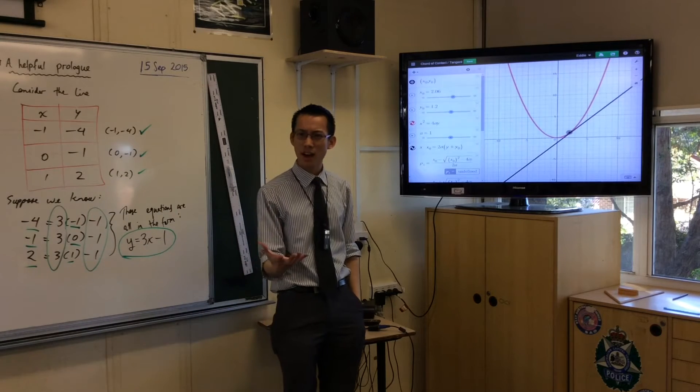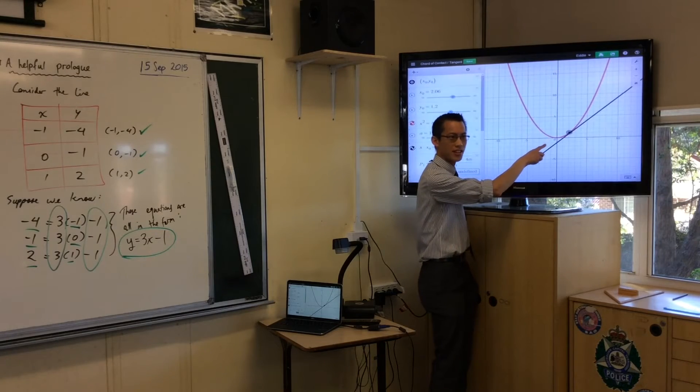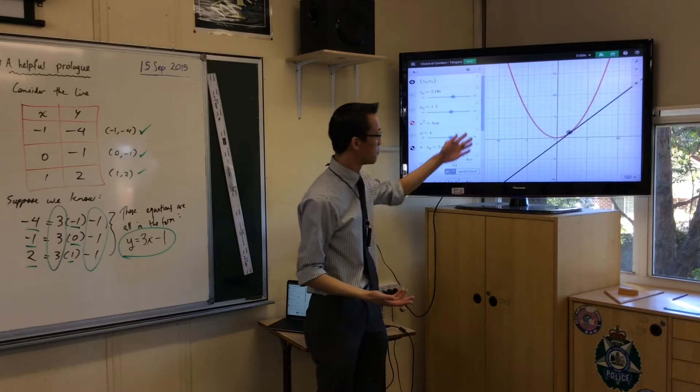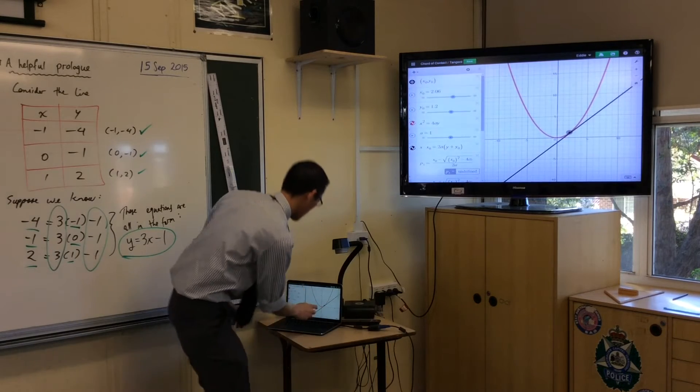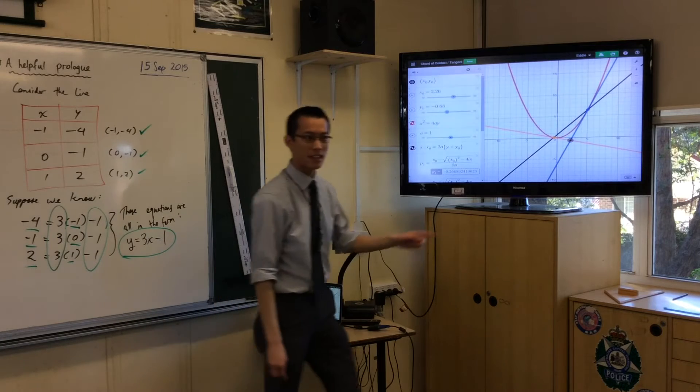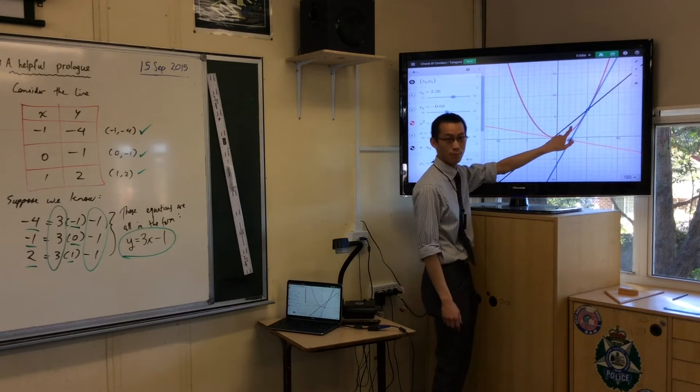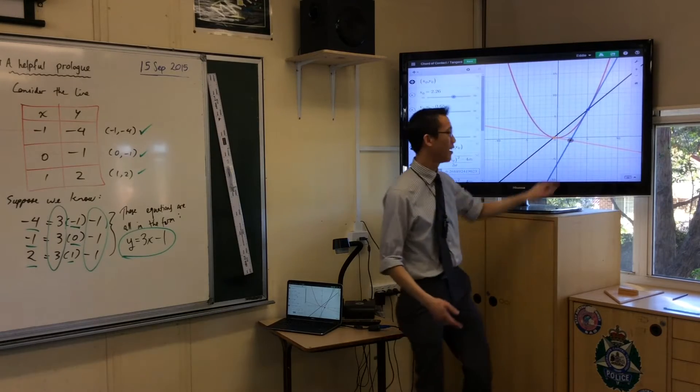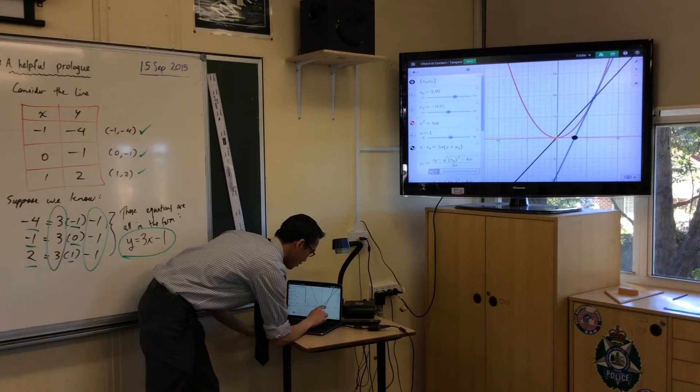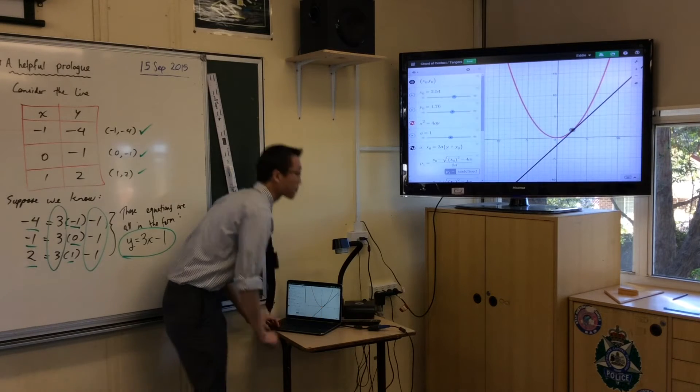In a sense, of course the chord of contact should give you the equation of the tangent, because they're really asking the same question. It's just that those two points, let me bring them back in. Those two points where those tangents that line up of, your external point happens to become a point on the parabola. So, let me just do that one more time so you can see how the tangents all magically line up.